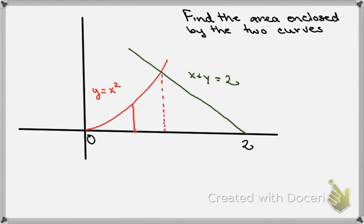But once I got to the intersection there, then my top function would change and the top function would be this function x plus y equals 2, or I could solve that and let that be y equals 2 minus x. And so it would go from that being the top function down to y equals 0.